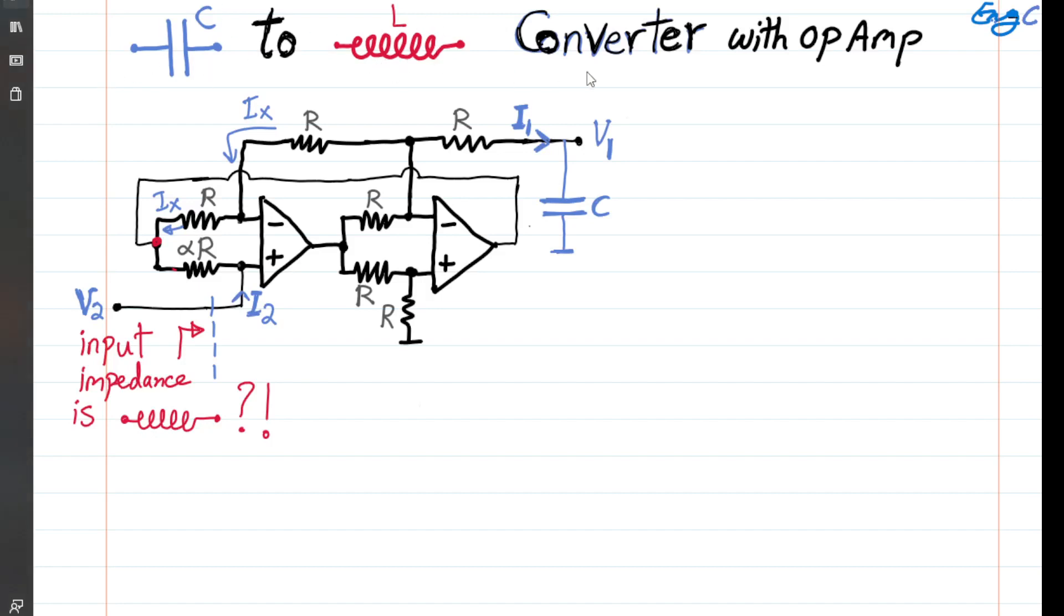A capacitor to inductor converter is shown that is realized with simply two op-amps in this simple circuit. As you can see, we don't have any passive inductor in this circuit. We only have a capacitor load, and somehow when you measure input impedance at port 2, it acts like an inductor. If this is true, it's effectively saying that with this simple circuit we can realize high-quality inductors, and that is something that we can hardly do with passive inductors. So it is practically very useful if it is properly set up. Let's see how it works.